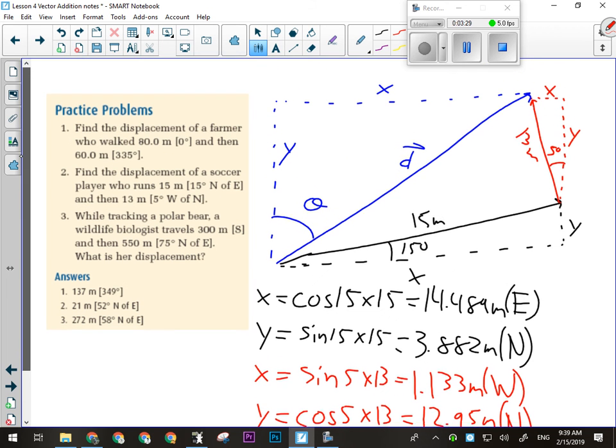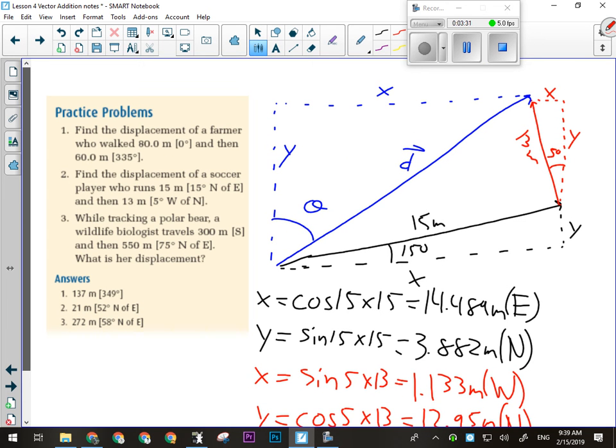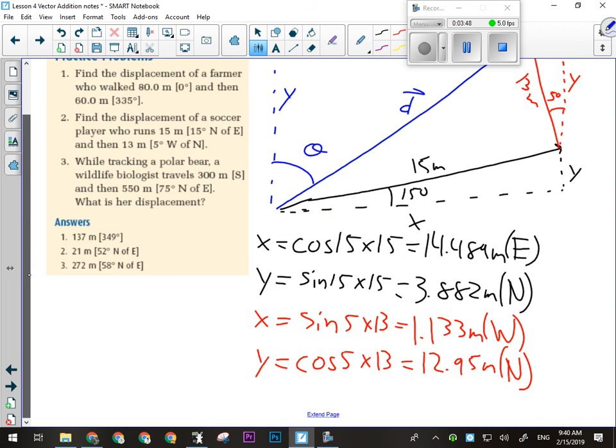If I go back to my diagram, if I take black x and add red x, which is negative, I'll get blue x. And the same thing goes for the y's. If I take black y and red y, they'll add up to blue y. So that's my next step, is calculating my resultant x and y components. All right, so blue x will be our 14.489 plus negative 1.133. Those are the two x components. And then my y is gonna be, they're both added. So 3.882 plus 12.95.